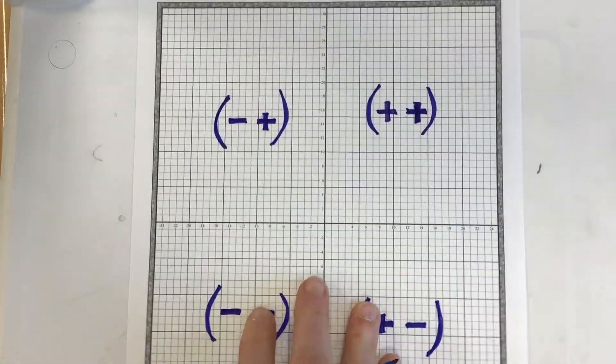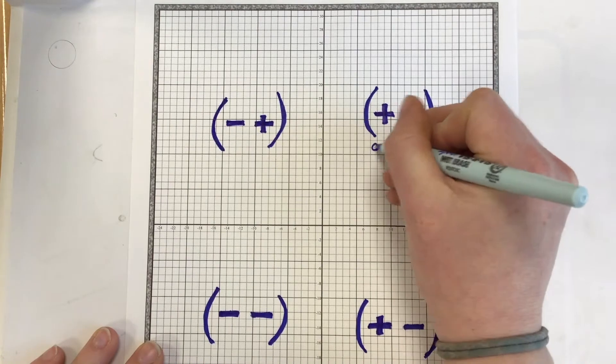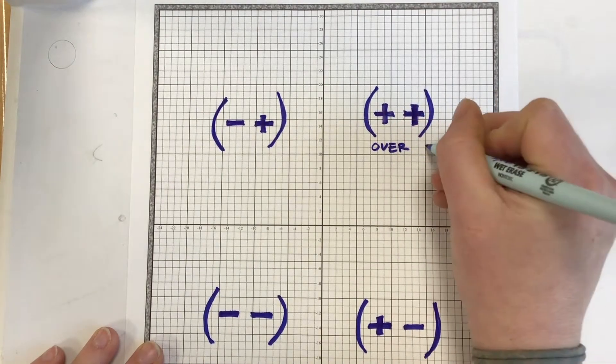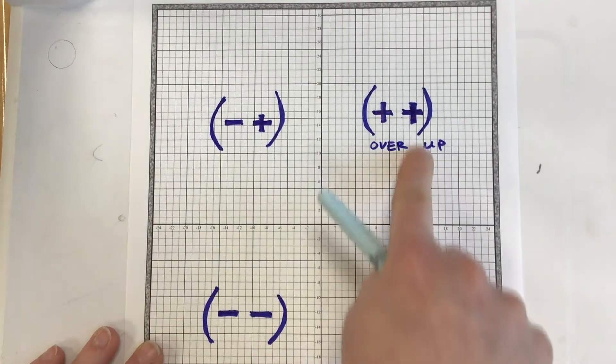And then I thought I'd give you a little tour of the quadrants. This is quadrant one. This is positive positive, which is basically over and up, right? Over, up.